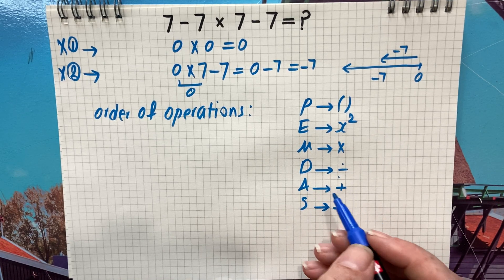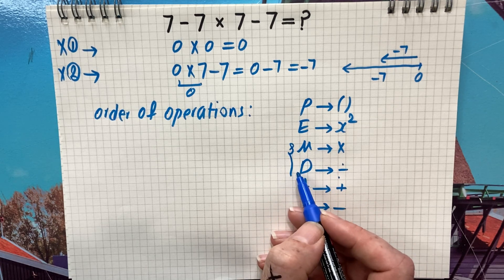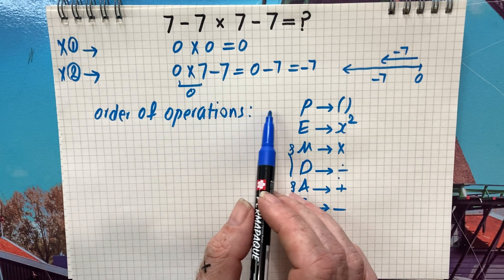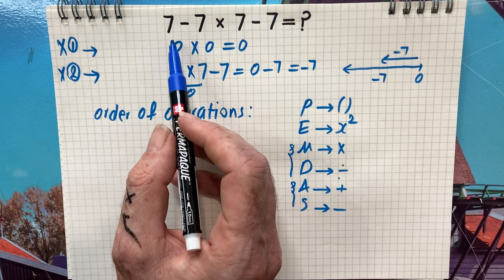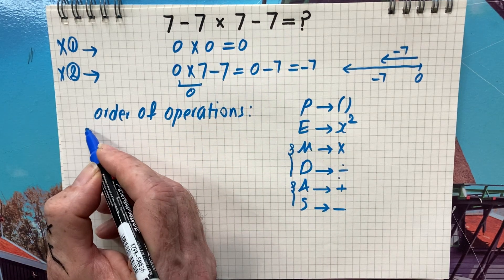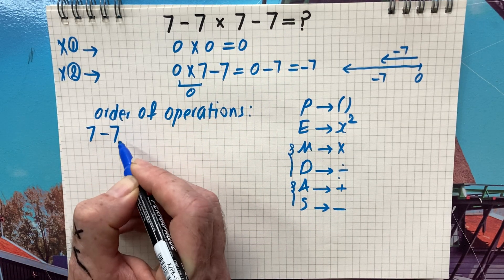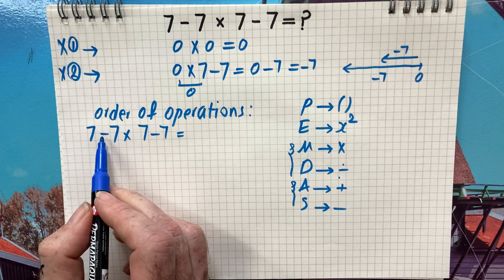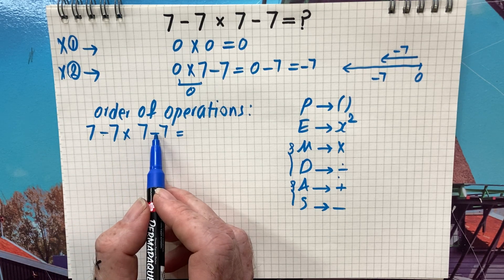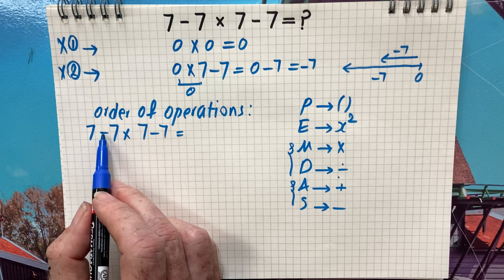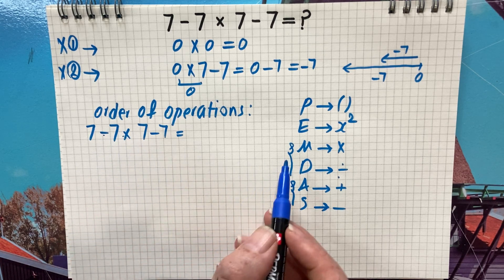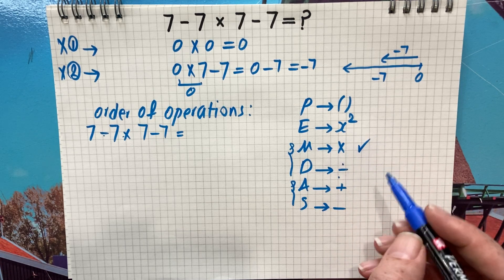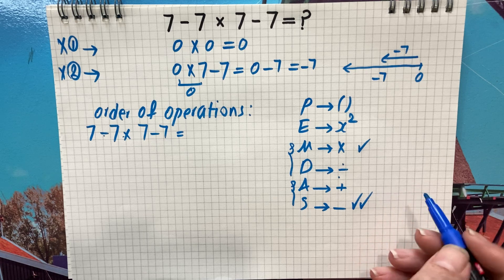Now let's follow the order of operations PEMDAS to solve this question. Rewriting: seven minus seven times seven minus seven. We have subtraction, multiplication, and subtraction. Should we start with subtraction or multiplication? Looking at PEMDAS, we need to start with multiplication before subtraction.